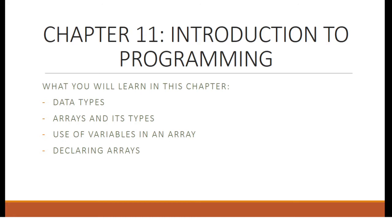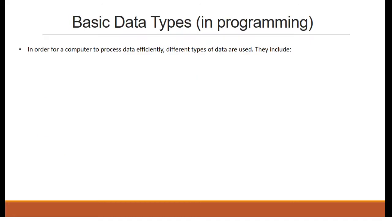Basic Data Types. In order for a computer to process data efficiently, different types of data are used. They include integer, which is a positive or negative whole number — for example, 10, 2000, -1, -200.